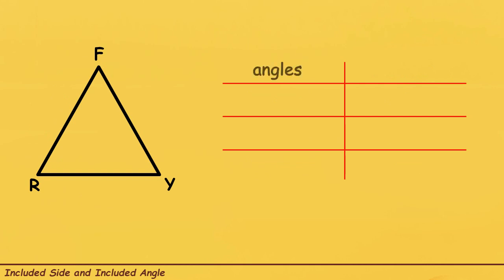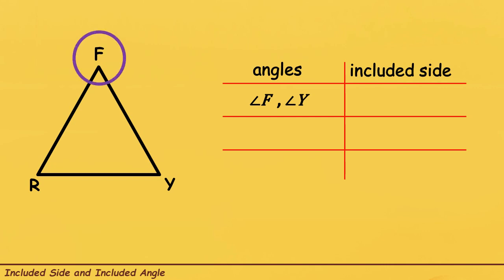This time, let us try to find the Included Side. Kapag ang Included Side ang ating hinahanap, we have two angles that are given. Let us try to find the Included Side of Angle F and Angle Y. Let us find where Angle F and Angle Y are in our triangle — Angle F is here and Angle Y is here. The Included Side of these two angles is the side na nagdudugtong sa kanila, or yung napaggigitnaan na side nitong dalawang angles, at yun ay itong side na to. Therefore, the Included Side of Angle F and Angle Y is Line Segment FY.